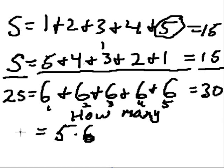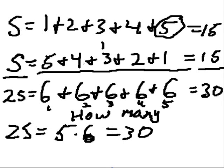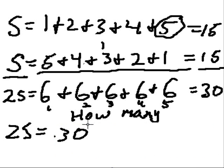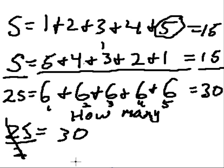5 times 6 equals 2s, which equals 30. So 2s is equal to 30. Divide by 2, and s is equal to 15.